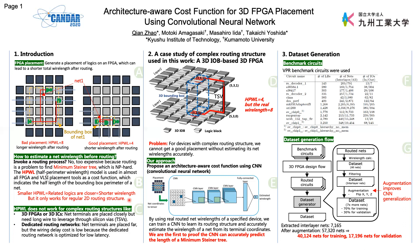However, HPWL only works for regular 2D routing structures. It does not work for new complex routing structures like 3D FPGAs or 3D ICs. In these devices, net terminals may be placed closely but require long wires leveraging through-silicon vias (TSVs) to reach another layer. Another example is dedicated routing networks, where terminals are placed far apart but wiring delay cost is low due to optimized low-latency routing. So, to explore these new routing architectures, we must find a new method to estimate net wire length.